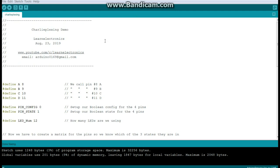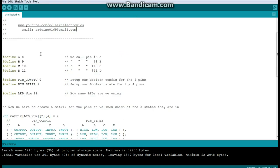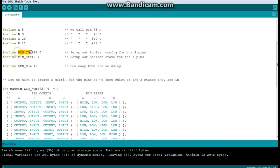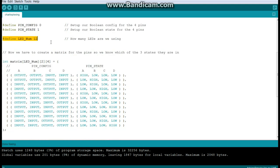All right, here's the code for the Charlie Plexing demo. The first thing we do is just define our pins. You could just as easily call the pin numbers but it just makes it easier to say A, B, C, and D. And then we're going to set up pin config and pin state which we're going to use to swap them between high and low and input. Now here's where I told you you could change the number of LEDs you're using. I've got it set up for the entire 12. You can make it as low as you want.